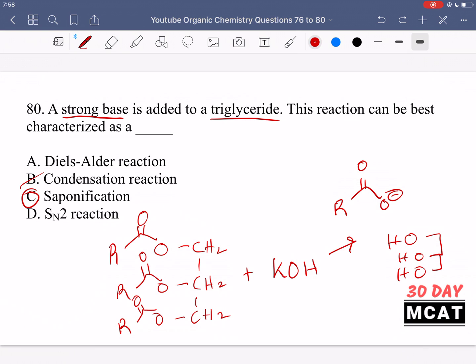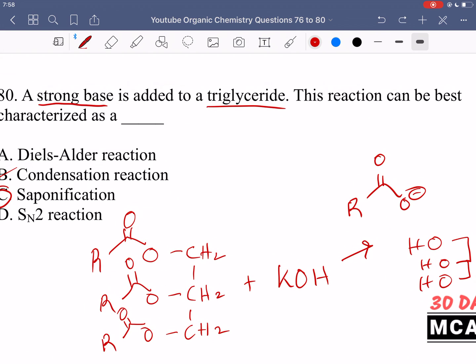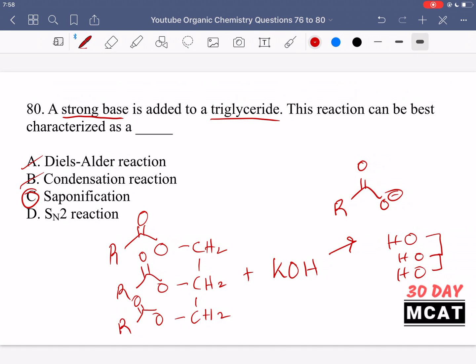Option A Diels-Alder - no, that's another type of reaction in organic chemistry. That's when we take some conjugated system and react it with a double bond. It's a lot of pi bond interactions and it ends up giving us a ring at the end. That's a different type of reaction. And it's definitely not an SN2 reaction. That's one of the most basic reactions in organic chemistry. You should realize that a strong base reacting with triglyceride is not an SN2 reaction. It is attack at a carbonyl. And once again, it's saponification.